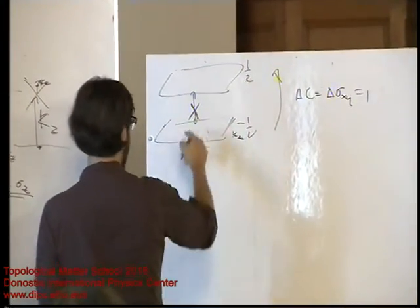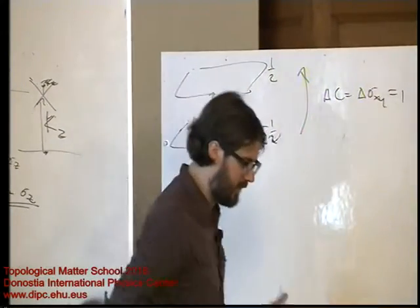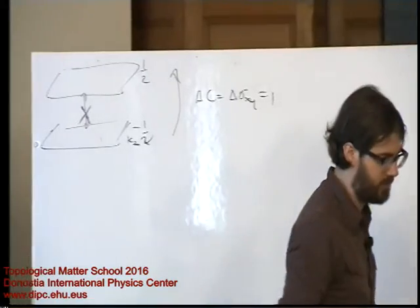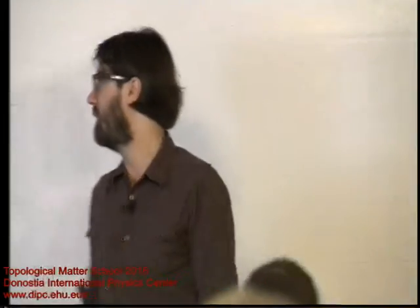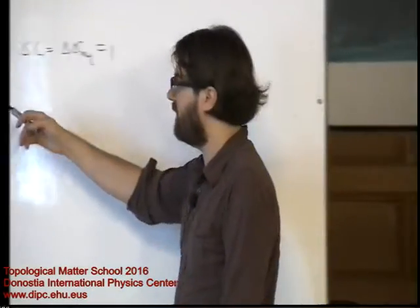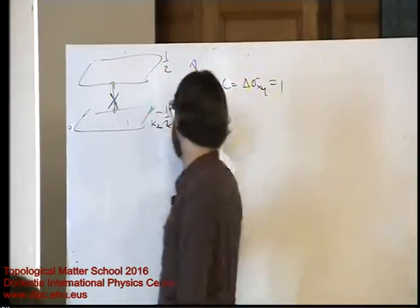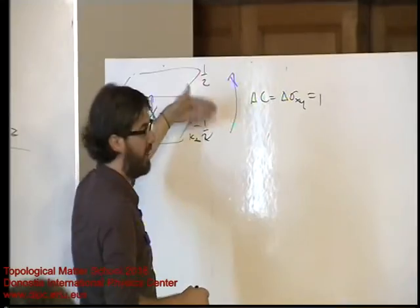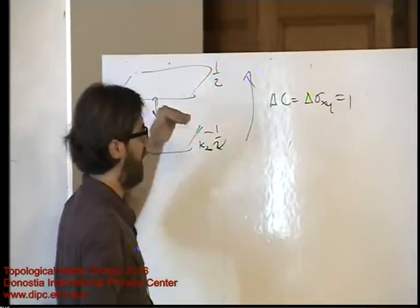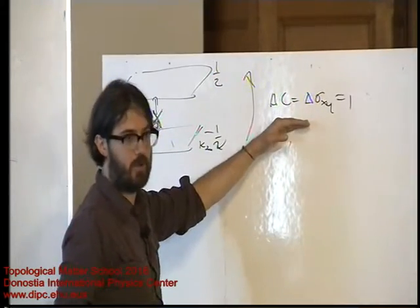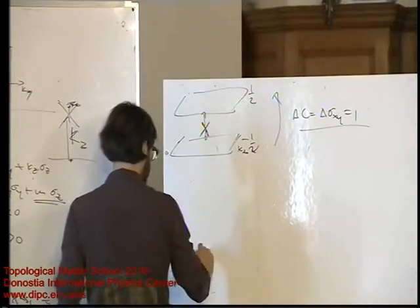One-half doesn't really make sense physically — there's a theorem that tells you that you can't have fractional Chern numbers in a non-interacting system. So this ½ is really ½ with respect to an offset value of another ½. But the point is: between the plane below and the plane above, as you go through the Weyl node, there's a change in the Hall conductance of 1. So let's revisit this with open boundary conditions.